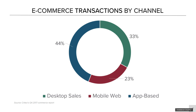This study looked at e-commerce retailers that had both a mobile web presence and a dedicated app. They saw 44% of transactions come from in-app and 23% from mobile web, so about two-thirds came through mobile channels. Notably, the study found a three times higher conversion rate for mobile apps than for mobile web, which is why many retailers are moving to dedicated apps.